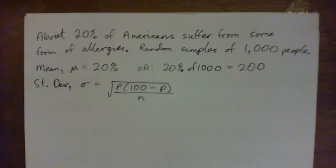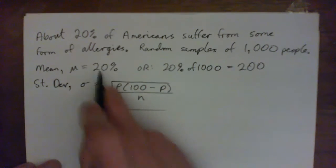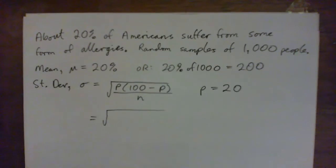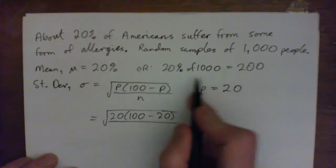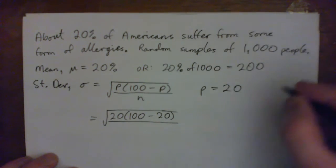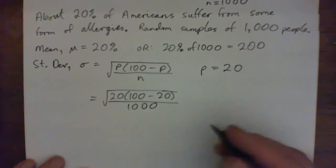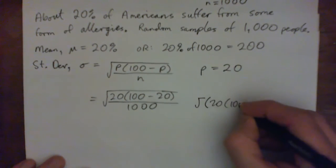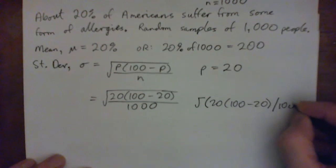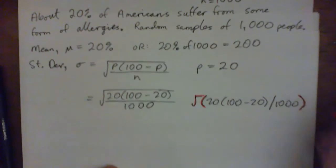Now the standard deviation formula is asking us to plug in P as a percentage — the number 20. So it's 20 times (100 minus 20) all over n, and our n is the sample size, which is 1000. The calculator entry would be: square root of parenthesis 20 times parenthesis 100 minus 20, close parenthesis, divided by 1000, close parenthesis for the square root.